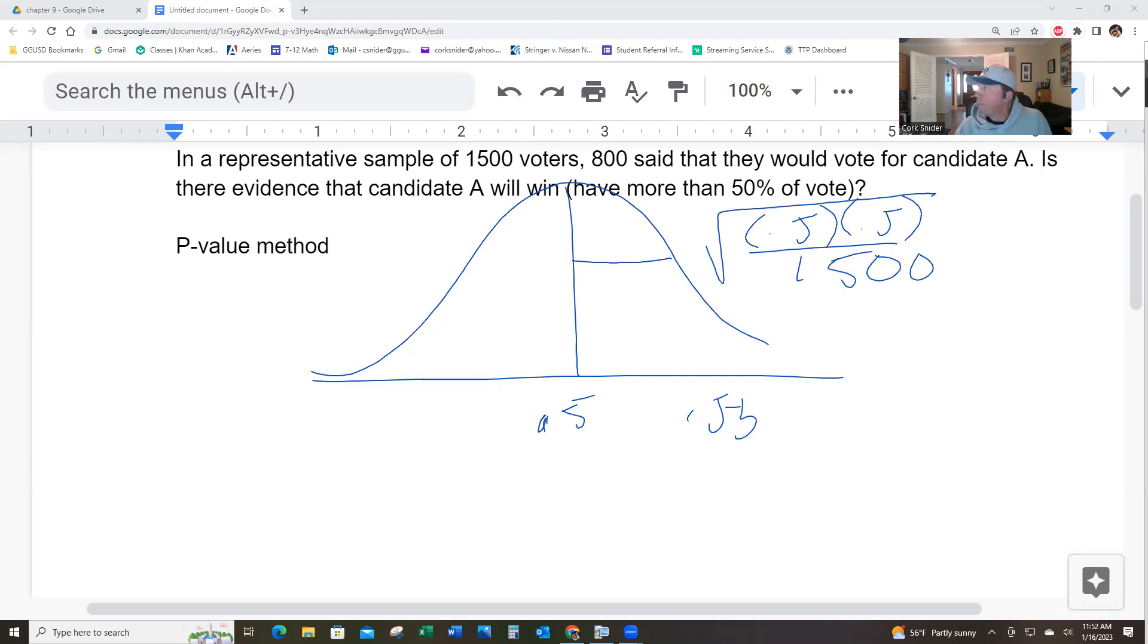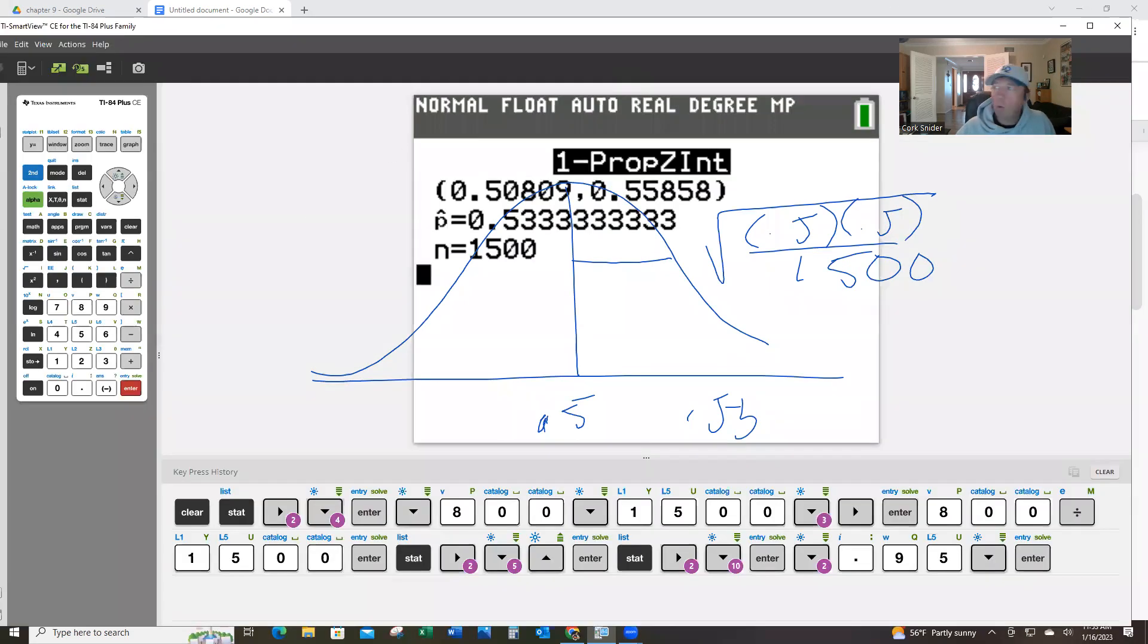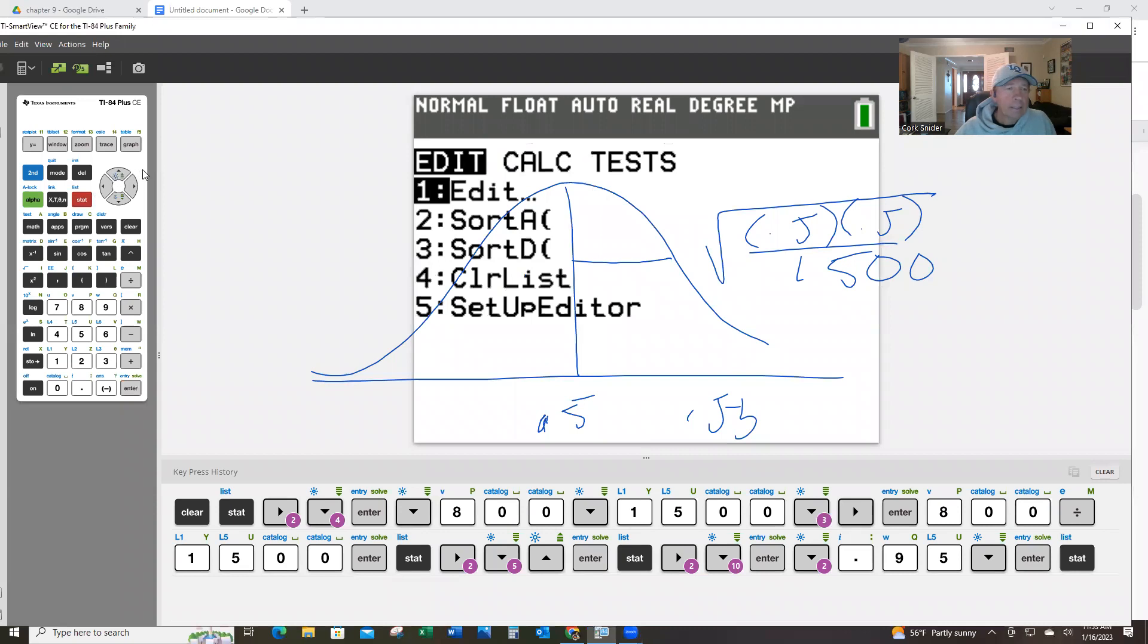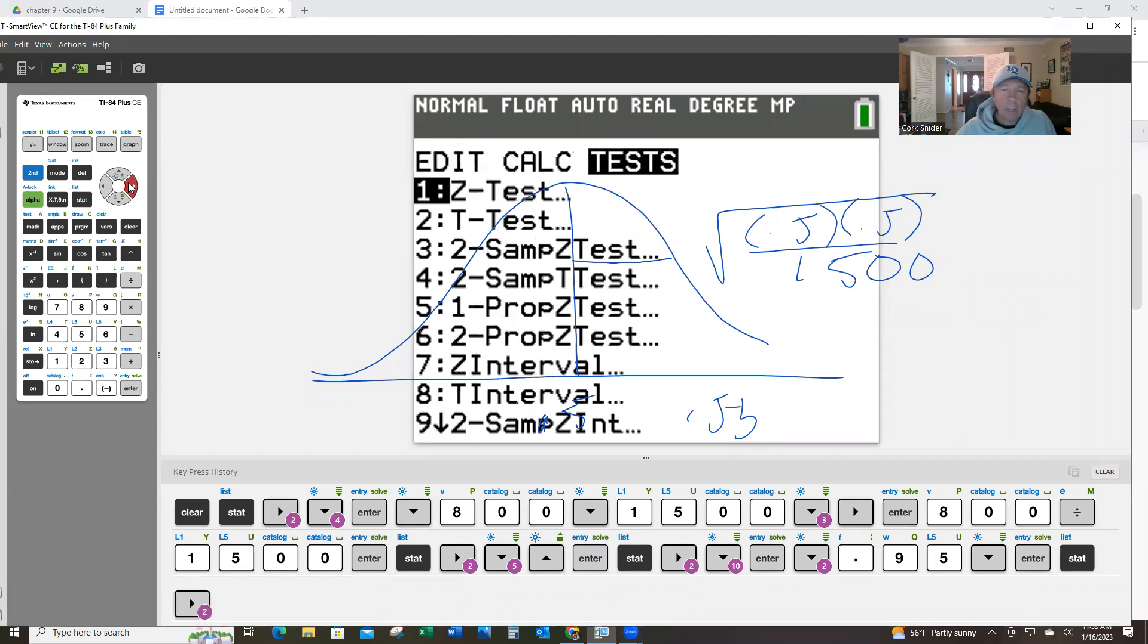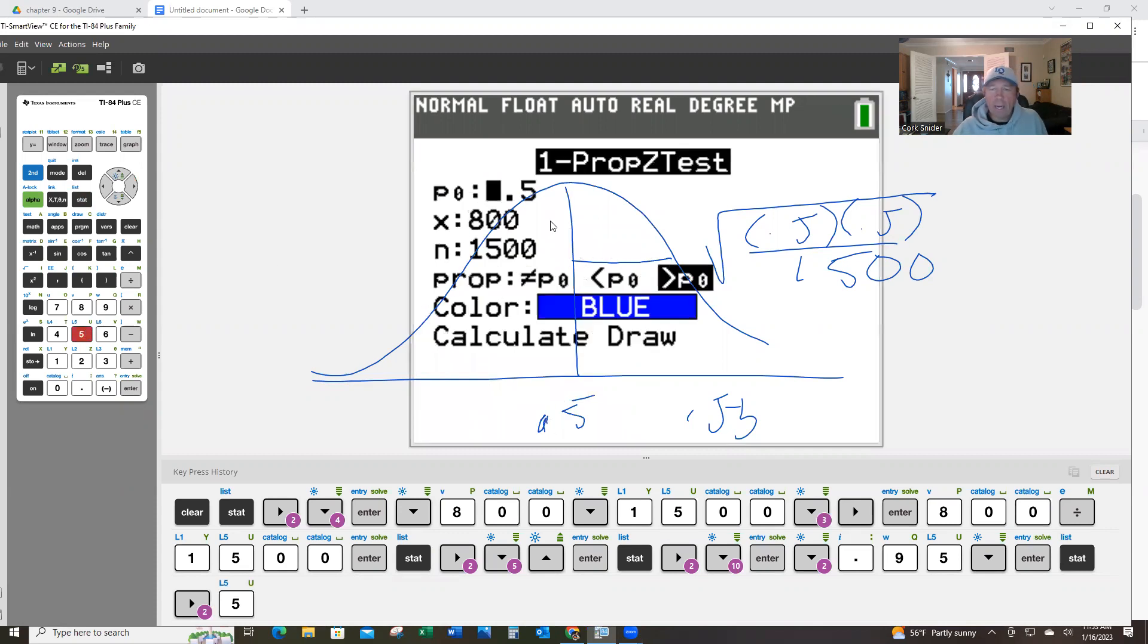All right, now, you're going to pretty much just pump it into your calculator. You're going to go stat, test, and you're going to go 1 prop Z test, item 5. I've already put it in there, greater than, and we're going to hit the calculate button.